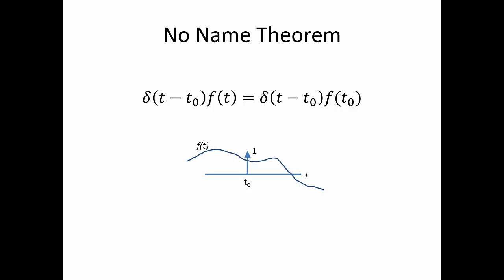Watch the video for learning outcome 2-3. We'll talk about that. In the meantime, the no-name theorem is when we take our impulse function, shifted to an arbitrary location t0, and multiplied by any function f of t. That function can be any arbitrary function. I've just drawn something here for an example.